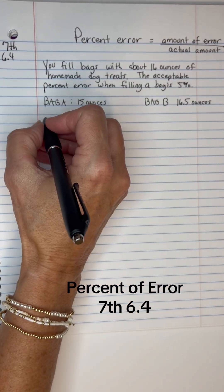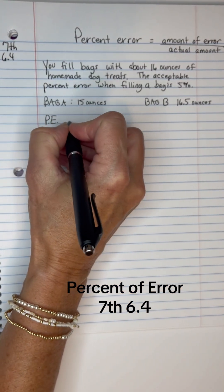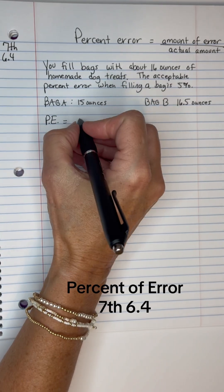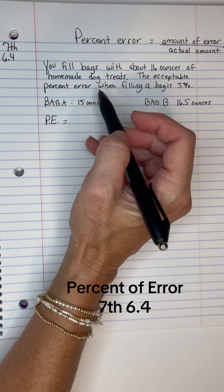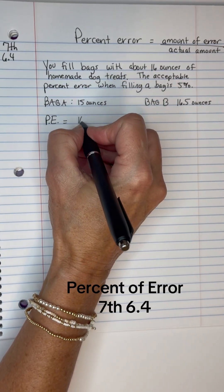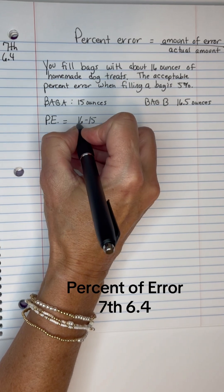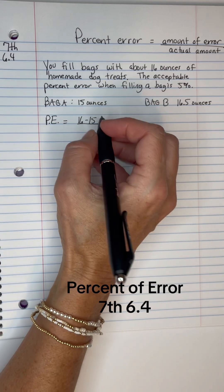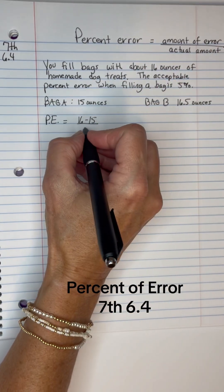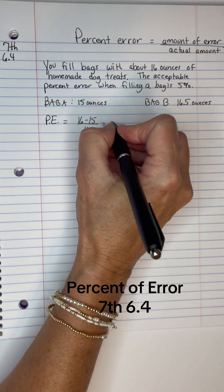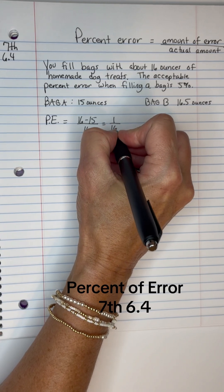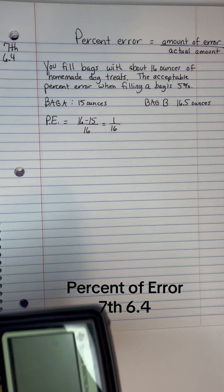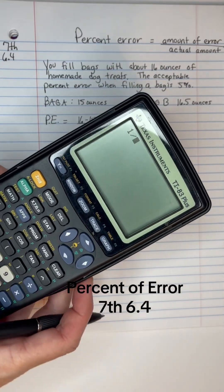So if we get the percent error, I think I'll call that PE. The amount of error would be, it's supposed to be 16, but we only have 15. So 16 minus 15, the amount of error is always going to be positive. Divided by the actual amount it's supposed to be is 16. So that's 1 over 16. Okay, let's divide 1 by 16.